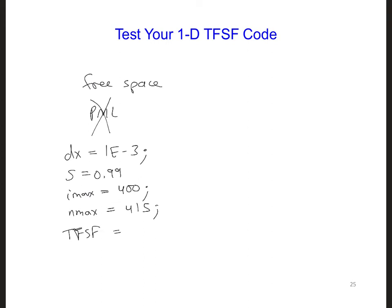And TFSF, the grid cell, the distance from the edge of the grid where we're going to have the total field scatter field region, is going to be 100. And so that's a little bit larger than we would normally want it to be. But we're not implementing PML, and so we're going to put it a little further away than we normally would.